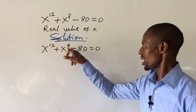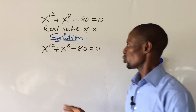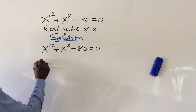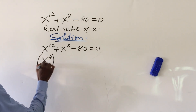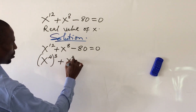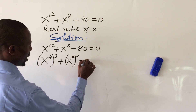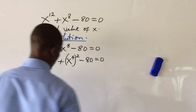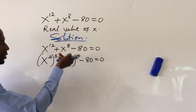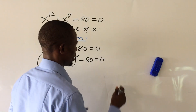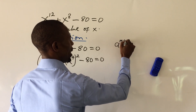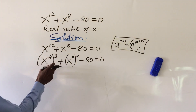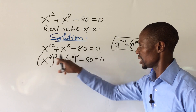Looking at the exponents, we can rewrite them in a different form. We write x to the power of 4 cubed, plus x to the power of 4 squared, minus 80, equal to zero. This has not changed anything. According to the law of indices, 4 times 3 gives us 12, and 4 times 2 gives us 8. The law states that a to the power of m raised to the power of n equals a to the power of m×n.